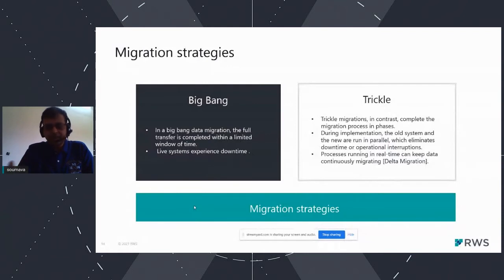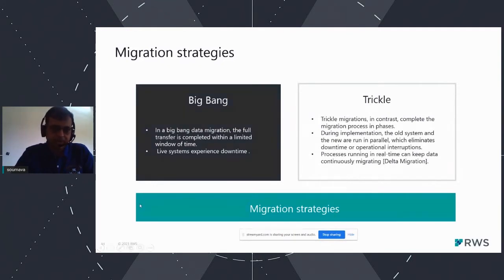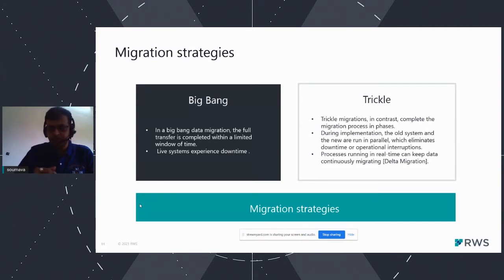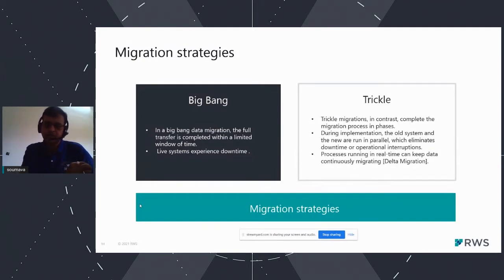Before going to the ECL migration-specific strategy, let's cover the basic migration project strategies widely followed in the IT industry. One is 'big bang' — pick everything from the legacy system, restore everything in the new system, switch off the live environment for a certain downtime period, do all configuration, then switch it back on. The other way is 'trickle' — two parallel environments run simultaneously: the legacy continues as-is while the newer system is being implemented. Once everything is tested and done, switch over. There will be no downtime, but there will be a requirement for delta migration.